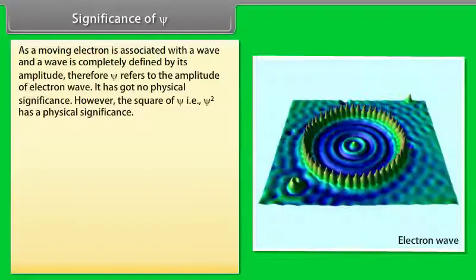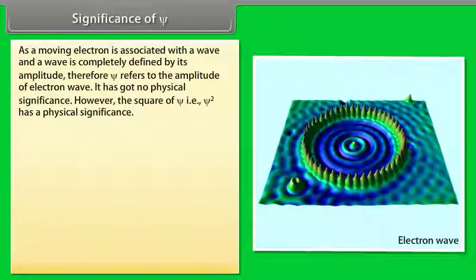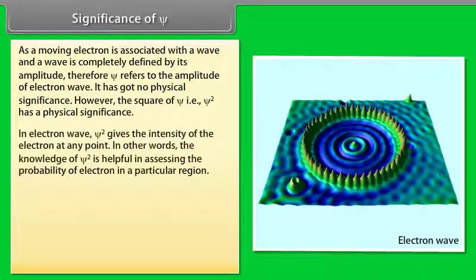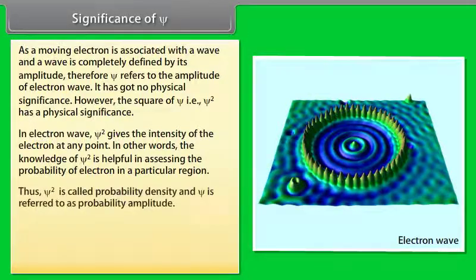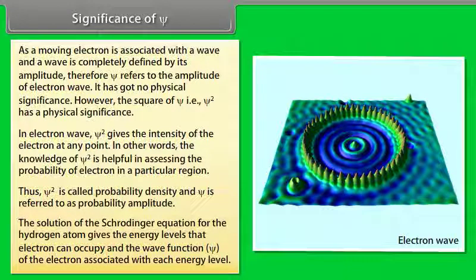Since a moving electron is associated with a wave, and a wave is completely defined by its amplitude, Xi refers to the amplitude of the electron wave and has no direct physical significance. However, the square of Xi — that is, Xi squared — has physical significance. In an electron wave, Xi squared gives the intensity of the electron at any point; in other words, Xi squared is helpful in assessing the probability of finding an electron in a particular region. Thus, Xi squared is called probability density and Xi is referred to as the probability amplitude. The solution of the Schrödinger equation for the hydrogen atom gives the energy levels that the electron can occupy and the wave function associated with each energy level.